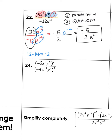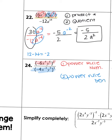Go ahead and try number 24 on your own. Your first step is the power rule in the numerator to take care of this power to a power. Then do the power rule in the denominator. Lastly, use the quotient rule to divide.